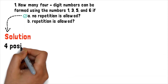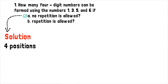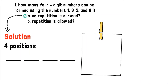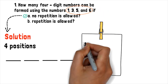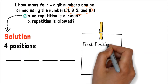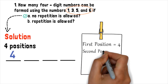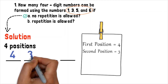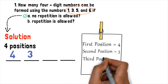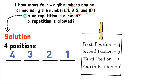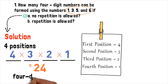There are 4 positions to be filled, so we will write 4 horizontal marks. On each horizontal mark, we write the number of choices available for that position. Since we have the numbers 1, 3, 5, and 6, there are 4 choices for the first position. After filling the first position, there are 3 choices left for the second position, 2 choices for the third position, and 1 choice for the fourth. Using the fundamental counting principle, we multiply all of them, giving us 24. So there are 24 four-digit numbers.